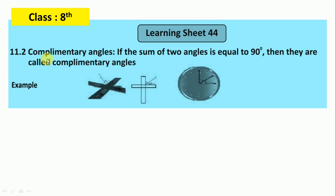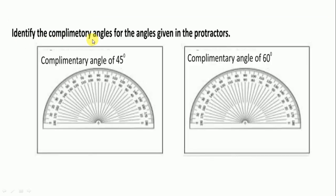LO 11.2 is Complementary Angles. If the sum of 2 angles is equal to 90 degrees, then they are called complementary angles. For example, a figure showing 90 degrees divided into 2 angles — the sum of those 2 angles is 90 degrees, so they are called complementary angles.